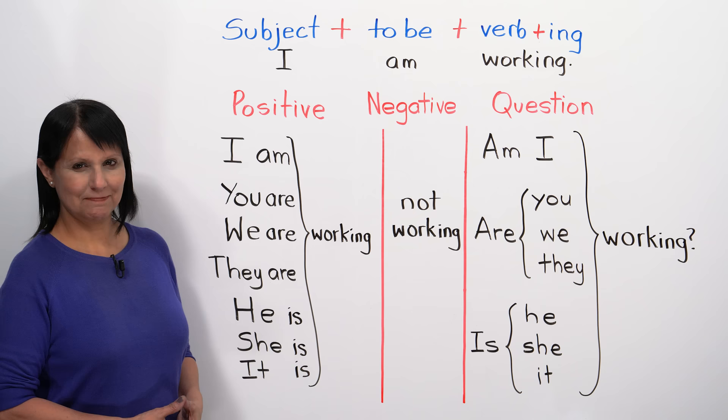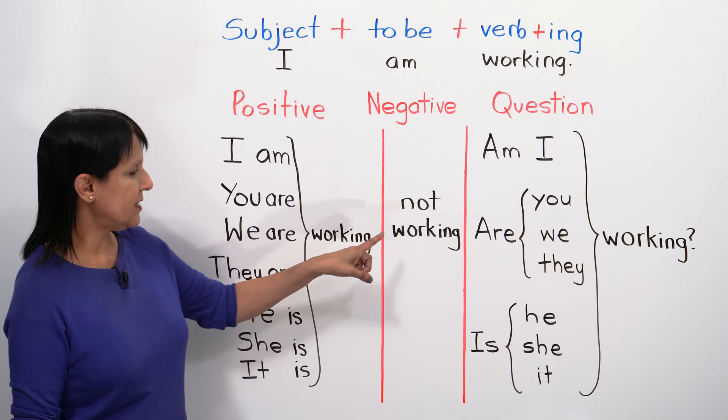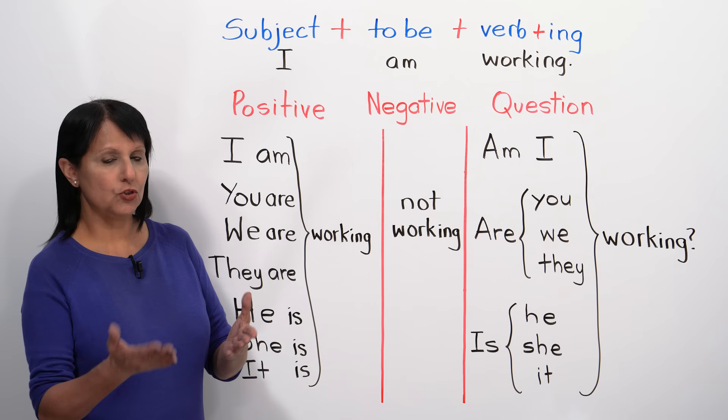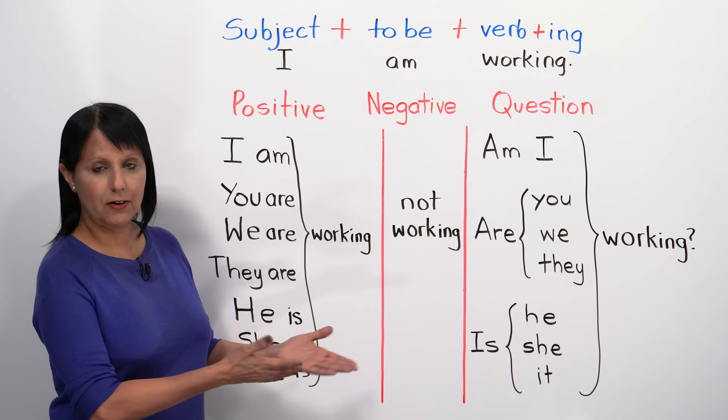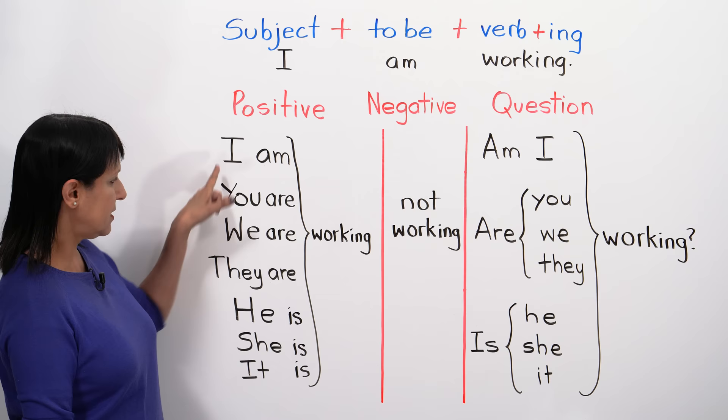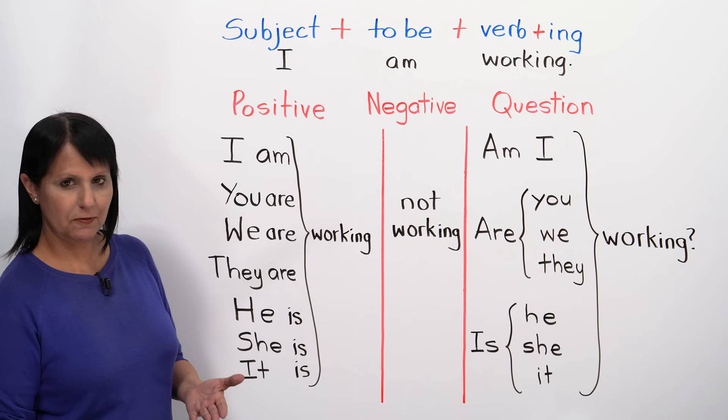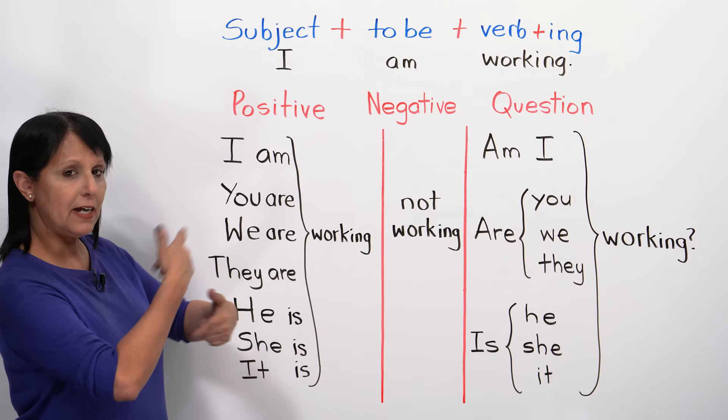For the negative, it's very easy — you just add 'not' before the verb plus -ing. For example: I am not working, you are not working, he is not working, they are not working. Just take the verb 'to be' and add 'not working.' For questions, we reverse the order. Instead of 'I am,' we say 'Am I.' Same as with the verb 'to be' alone.